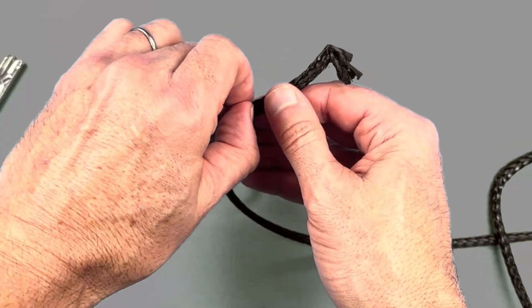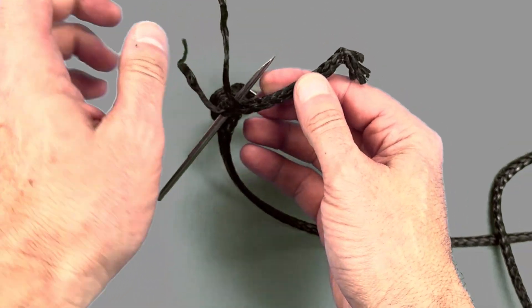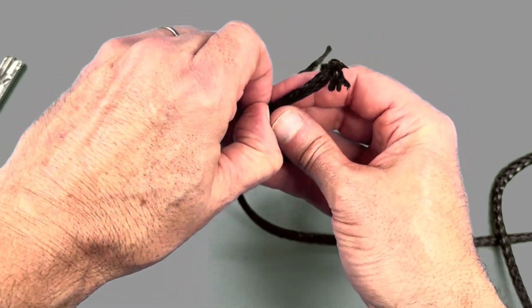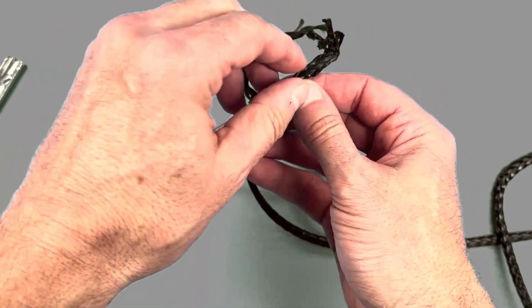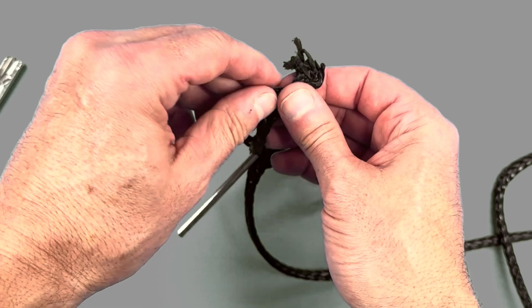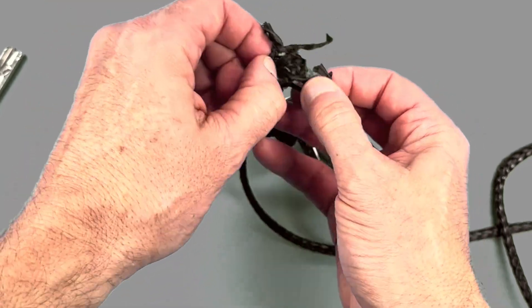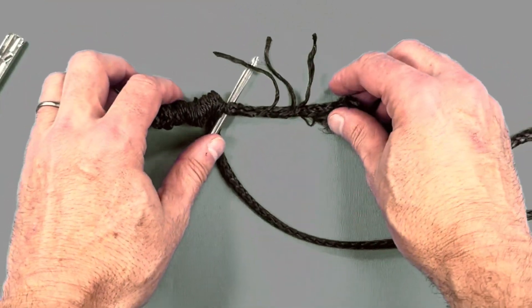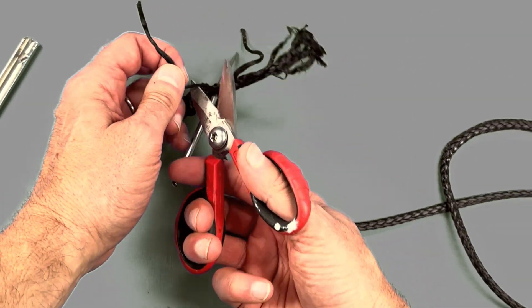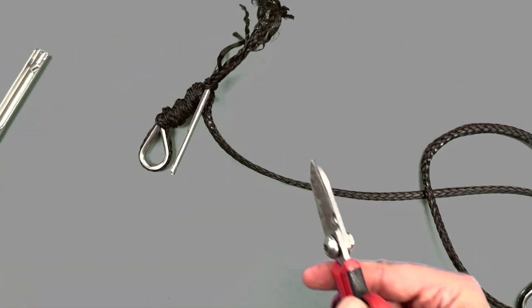Grabbing the threads close to the fid that's holding it in place, pulling one out every couple of threads, and then taking your shears and snipping them off.